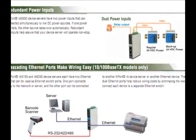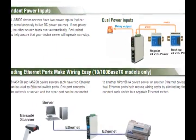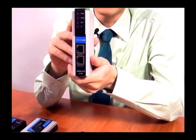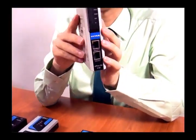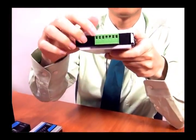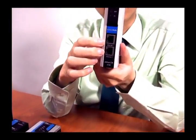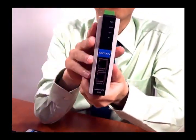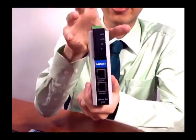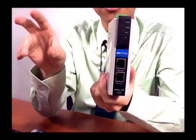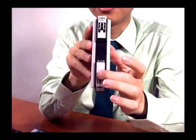As industrial automation networks became more integrated with industrial Ethernet, you begin to see Ethernet devices that are purpose-built for use in an industrial setting. For example, the M-Port IA5150 released in 2006 has many features built specifically for industrial use, including redundant power input, two Ethernet ports for cascade wiring, a vertical narrow very compact space-saving form factor so it can be stacked side by side, and it's DIN rail mountable.